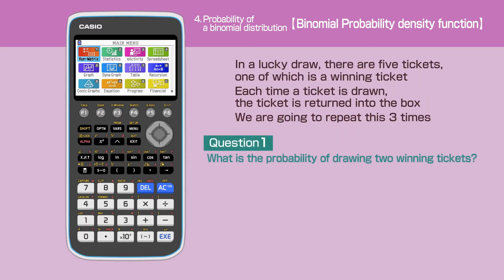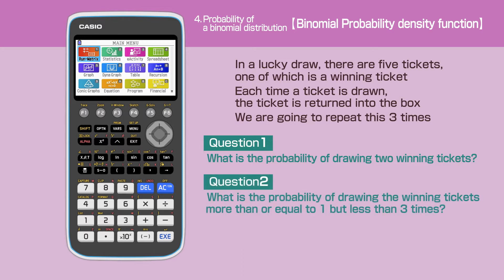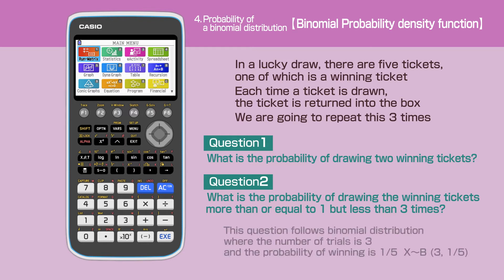Question 1: What's the probability of drawing two winning tickets? Question 2: What's the probability of drawing the winning tickets more than or equal to one, but less than three times? This question follows binomial distribution, where the number of trials is 3 and the probability of winning is 1 over 5.